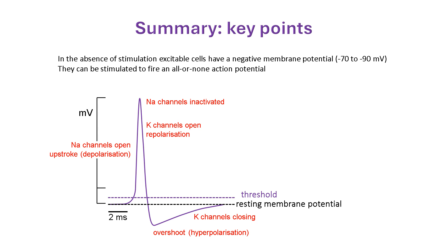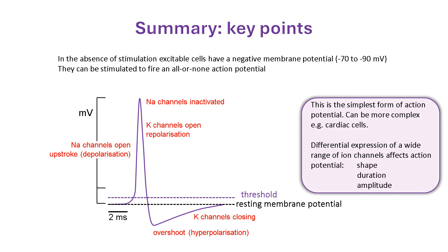I've focused on neuronal action potentials because of their simplicity. Cardiac and skeletal muscle cells are also excitable. While skeletal muscle displays action potentials like neurons, cardiac action potentials are more complex and on a longer timescale. That reflects the presence of additional ion channels that shape the events triggered when the cell reaches threshold.